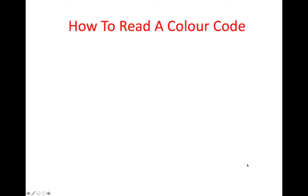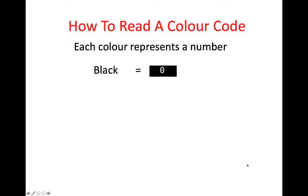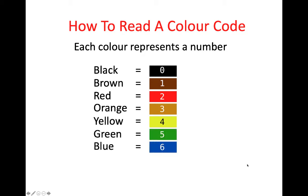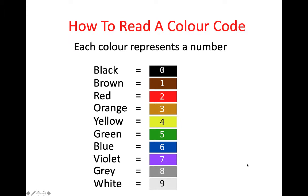So let's look at how you read a colour code. In essence, each colour represents a number. For example: black is equal to 0, brown is equal to 1, red is equal to 2, orange is equal to 3, yellow is equal to 4, green is equal to 5, blue is equal to 6, violet is equal to 7, grey is equal to 8, and white is equal to 9.